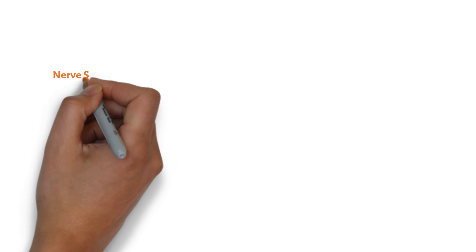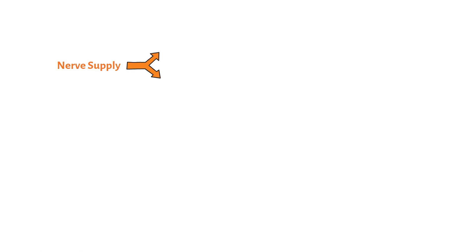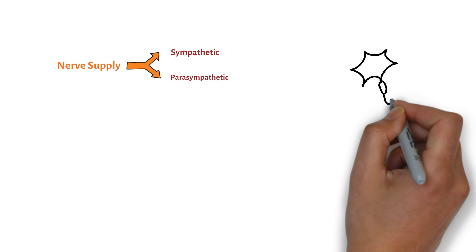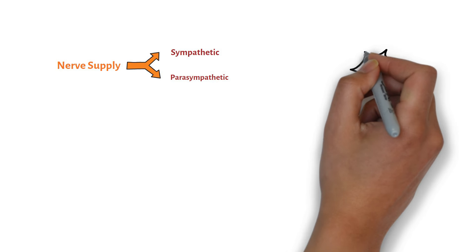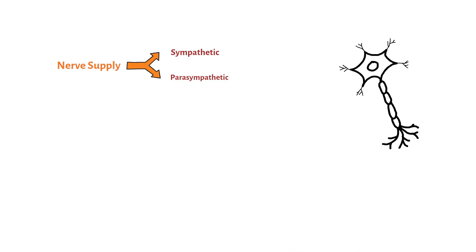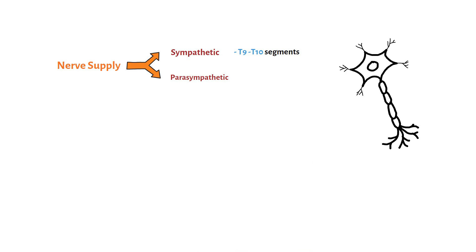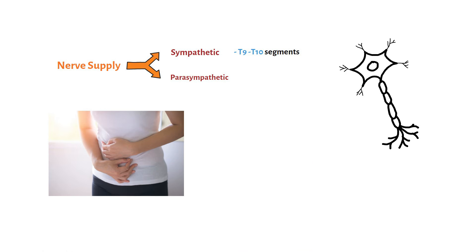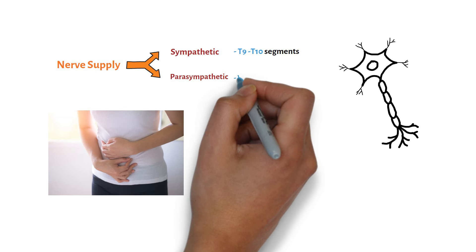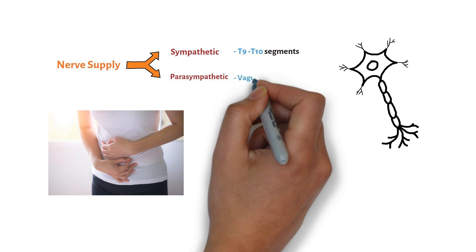The nerve supply of the appendix is both sympathetic and parasympathetic. The autonomic innervation arises from the superior mesenteric plexus. Afferent sensory fibers are carried on sympathetic nerve fibers, entering the spinal cord at the T10 level, which corresponds to the umbilical dermatome. This is why appendicitis causes pain in the periumbilical area. The parasympathetic supply is from the vagus nerve.